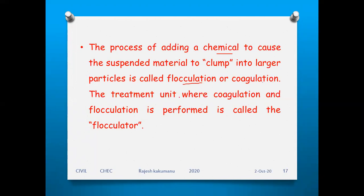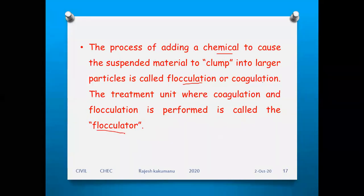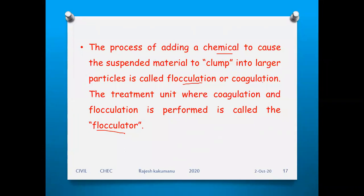The process of adding a chemical to cause the suspended material to clump into larger particles is called flocculation or coagulation. Coagulation means chemicals cause whatever matter is suspended in the water to clump into large particles forming on the top surface. The treatment unit where coagulation and flocculation is performed is called a flocculator.